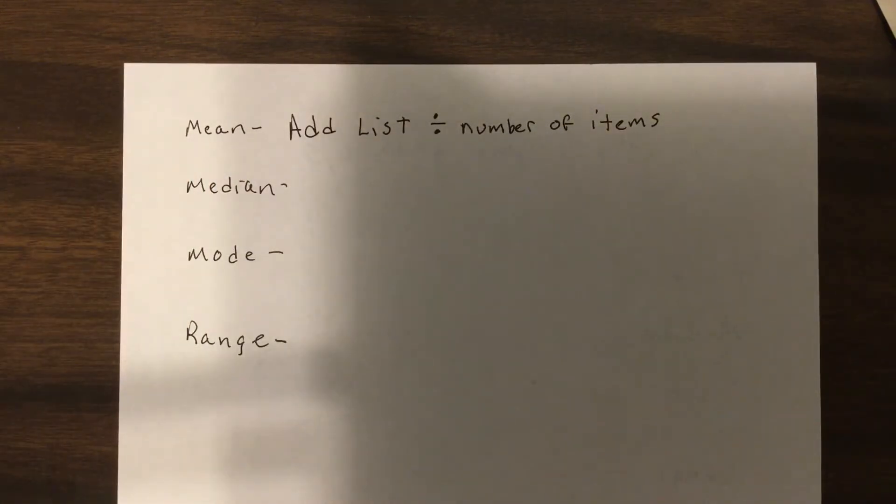It's called skew, s-k-e-w, which means pull it bigger or pull it smaller so it's not typical of the list. So if you were a real researcher you'd have to think, gee, do I want to use this really big number, really small number? Is it an outlier?